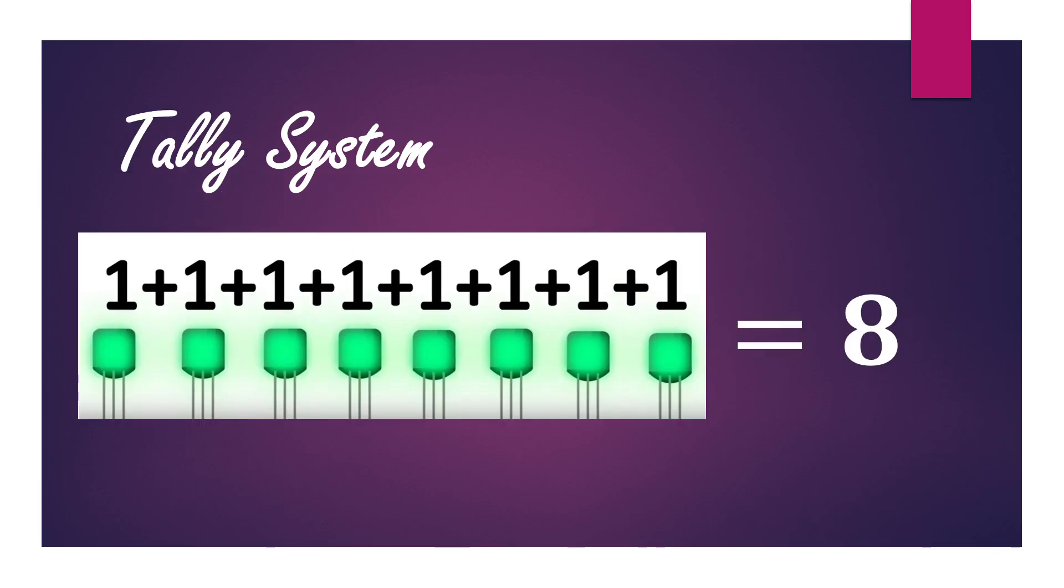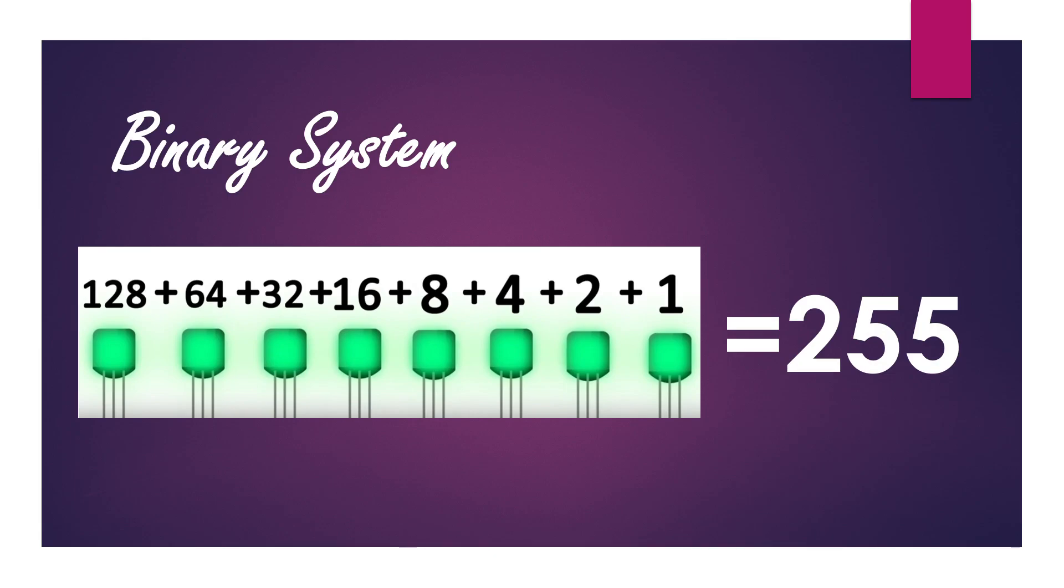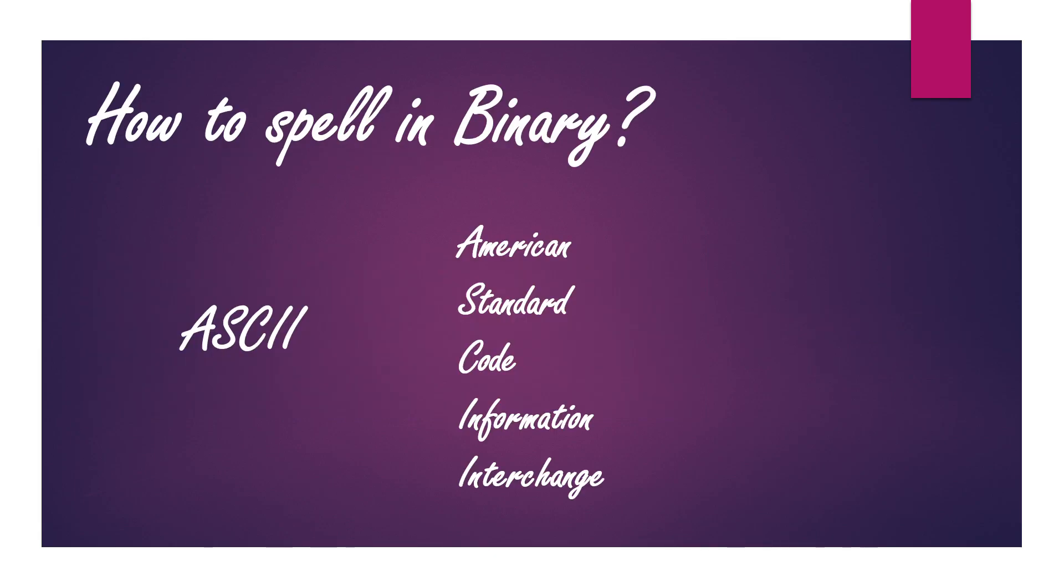So the maximum number you can attain with the help of tally system when you have all 8 transistors on is 8. But what about the binary system? This is 255. So this is about how a system can write numbers. You can simply convert decimal numbers like 25 or 65 into binary from decimal to binary.